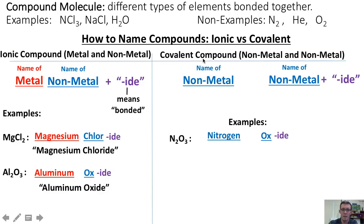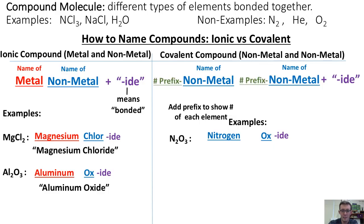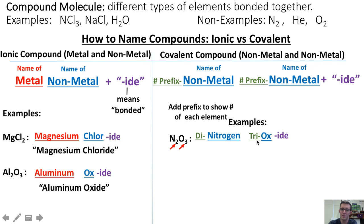However, in naming covalent compounds, chemists will add a prefix in front of each element to show the number of each element. Since we have two nitrogen atoms in our molecule, we would add the prefix "di-" in front of nitrogen to show that there are two nitrogens. And since there are three oxygen atoms, we would add the prefix "tri-" in front of oxygen. So the name of this molecule would be dinitrogen trioxide.